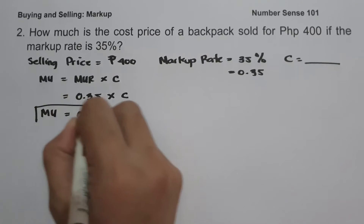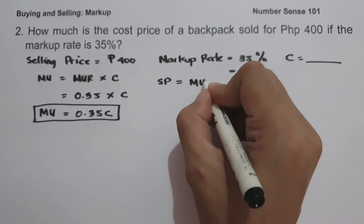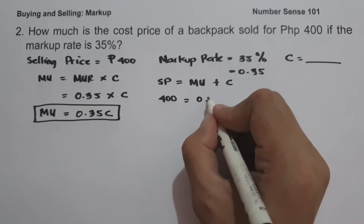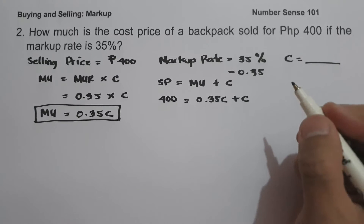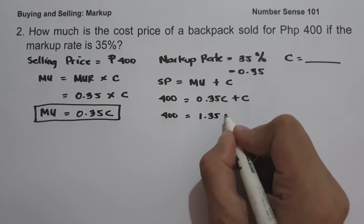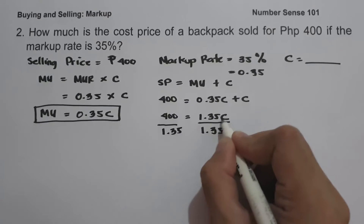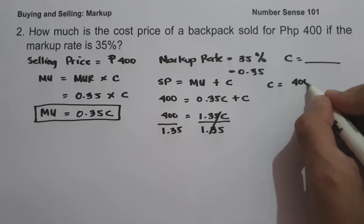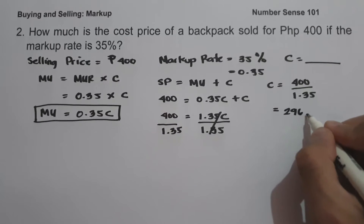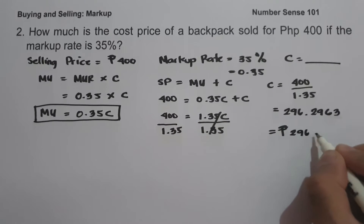We will use this markup value to determine the cost. Using the formula selling price equals markup plus cost: 400 equals 0.35C plus C, which simplifies to 400 equals 1.35C. To determine the value of the cost, let us divide both sides by 1.35. So cost equals 400 over 1.35, which gives us 296.2963, or simplified, 296.30 pesos. So this will be the cost price of a backpack.